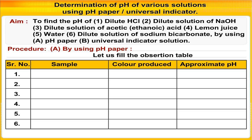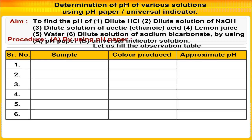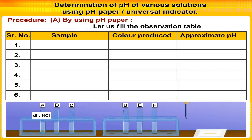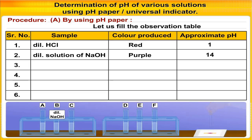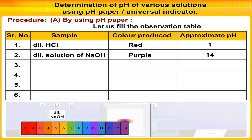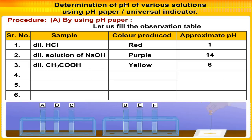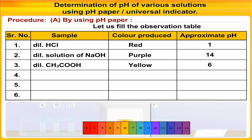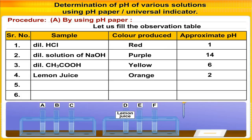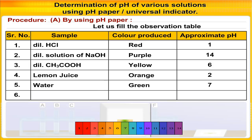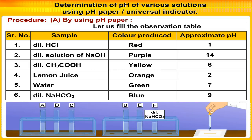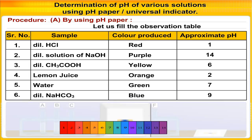Let us fill the observation table. The samples are: dilute HCl, dilute solution of NaOH, dilute solution of acetic or ethanoic acid, lemon juice, water, and dilute solution of NaHCO₃.